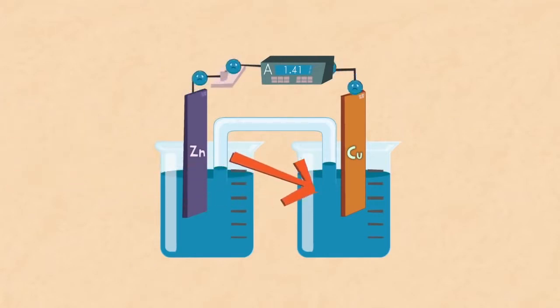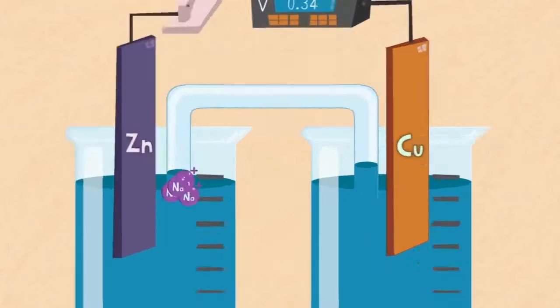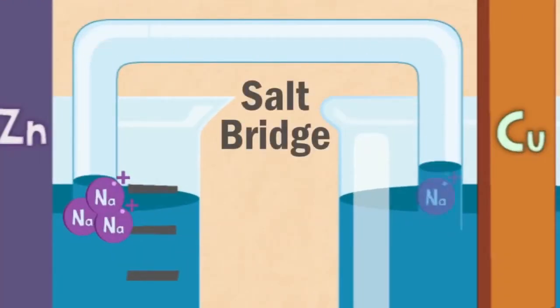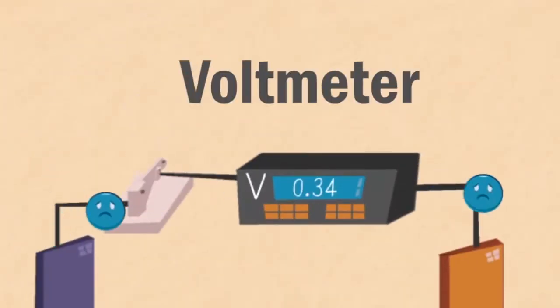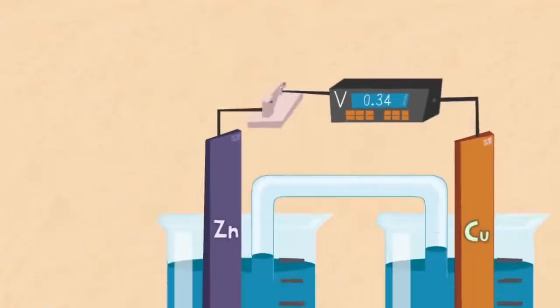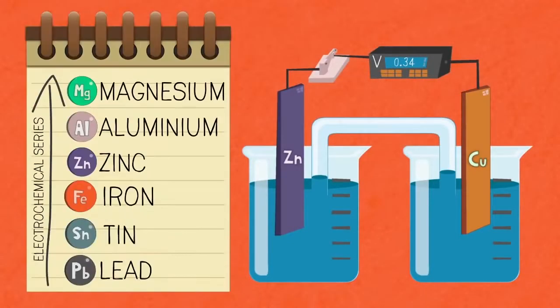It is important that you remember that the electrons do not flow through the solution, only the wire. It's charged ions that move across the salt bridge. The voltmeter measures the force that pushes the electrons through the wire. Say that you replace the zinc metal for a metal that was higher in the electrochemical series, like magnesium.